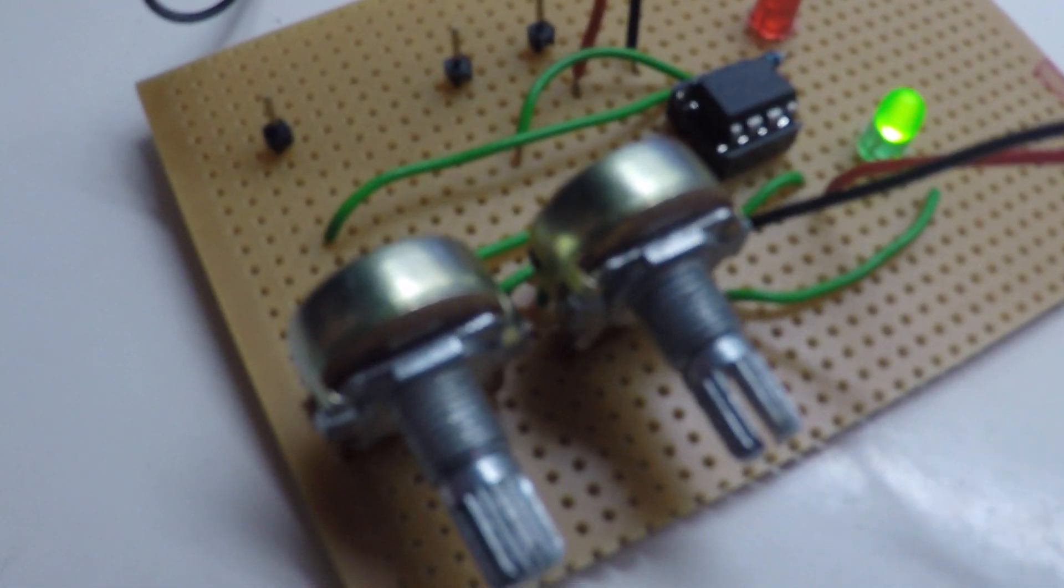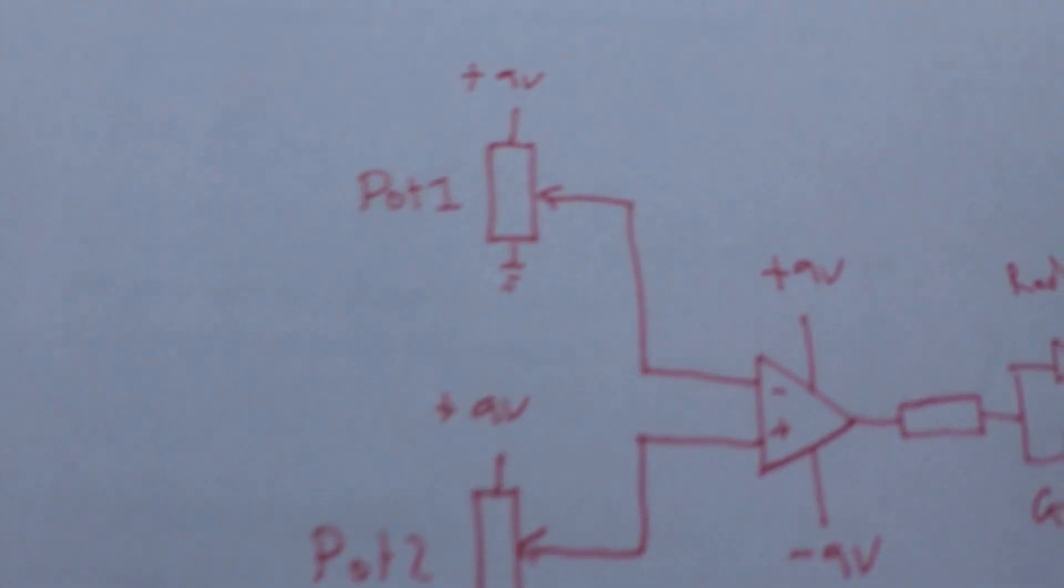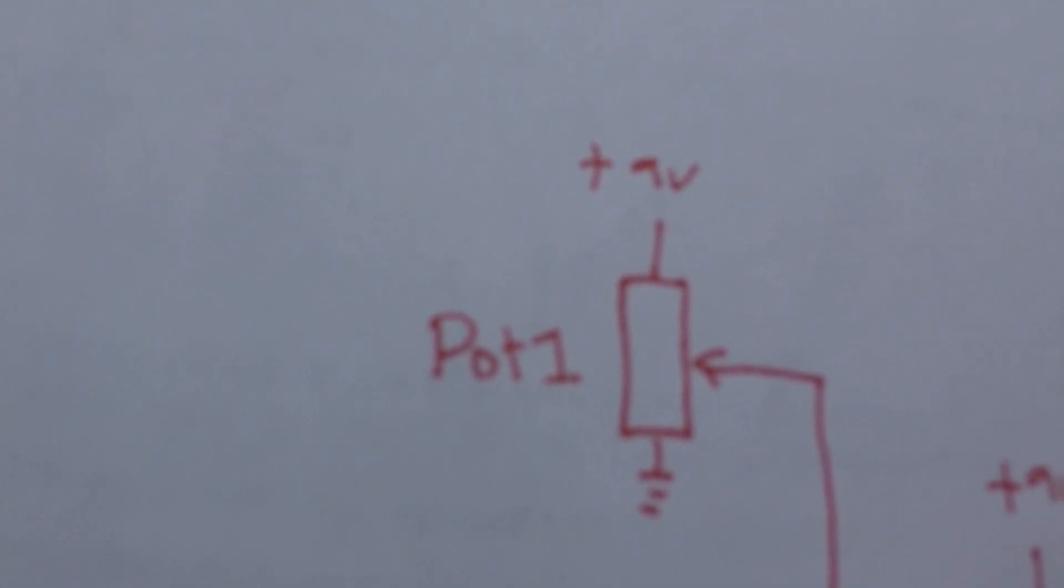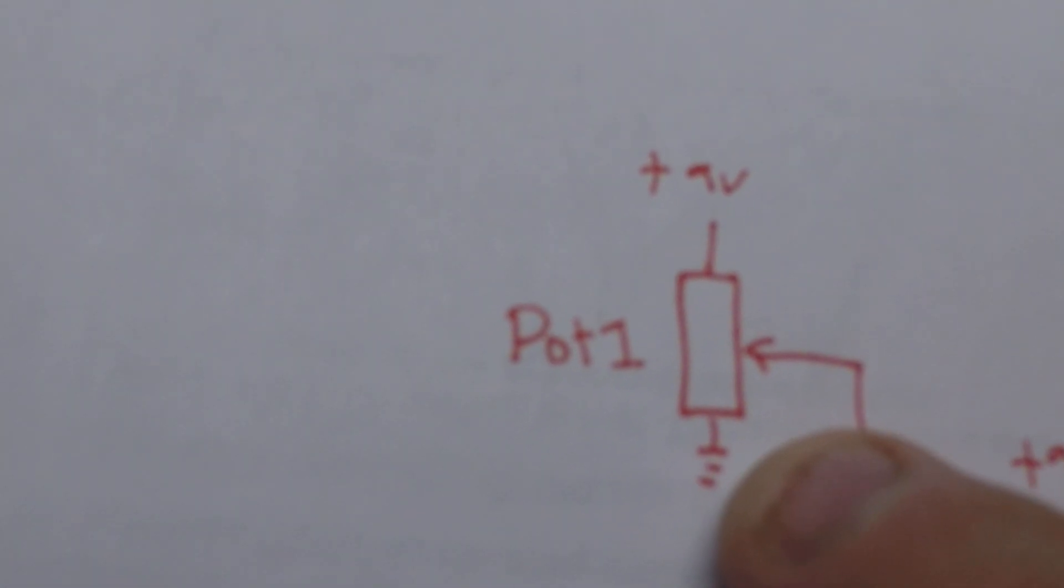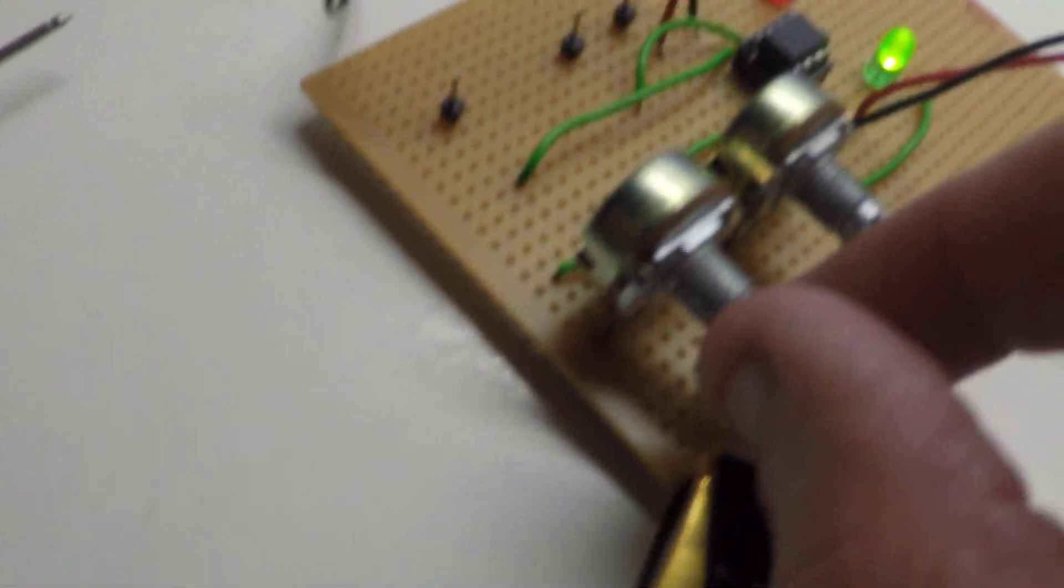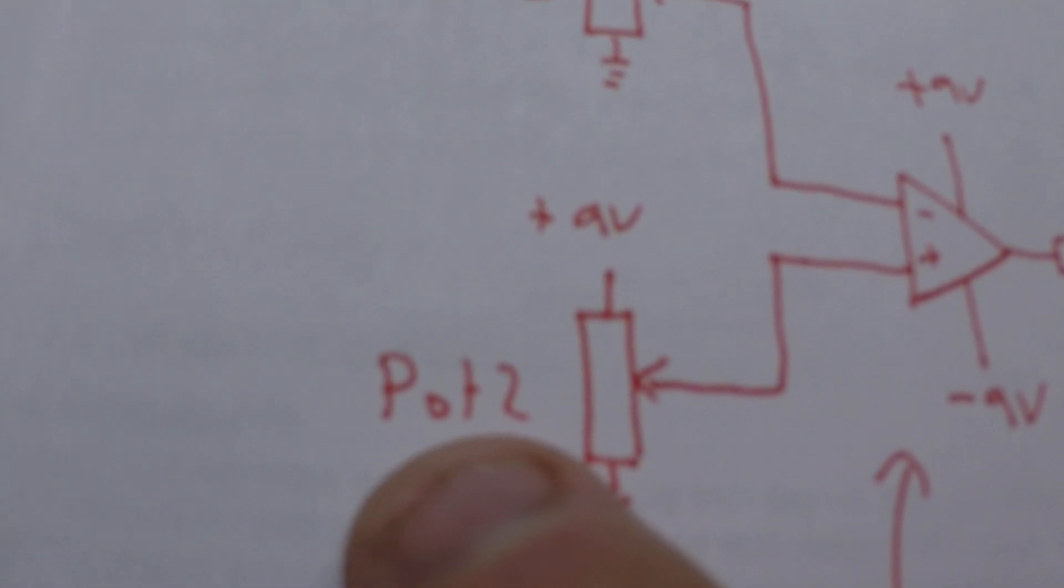Now I've got two potentiometers here. If we go back to the diagram, my two pots have got positive 9 volts at the top and earth at the bottom. So as I adjust my potentiometer here, I can choose any voltage from zero or ground to 9 volts. And that's the same with potentiometer number two.